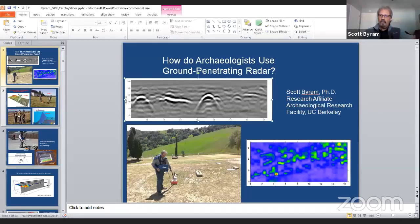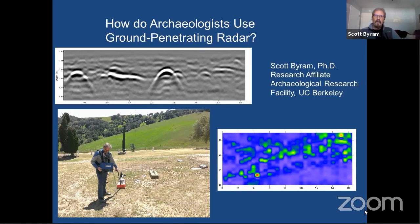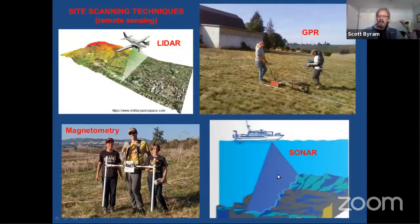We can talk about the different techniques we use when doing ground penetrating radar and how we identify different types of archaeological features. Here I'm mapping a cemetery at Black Diamond Mines in the East Bay — you can see a GPR profile and a GPR slice map. GPR is different from other techniques that archaeologists use to scan the landscape and identify and characterize archaeological features and entire sites.